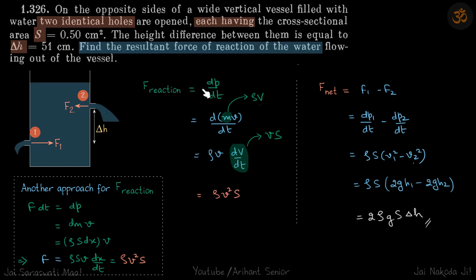So we know the force is rate of change of momentum. Here we have two forces F1 and F2. Because the water is gaining momentum towards left, the reaction force on the vessel will be towards right, let's call that F1. And here the water is flowing towards right, so reaction force on the vessel will be towards left, let's call that F2.